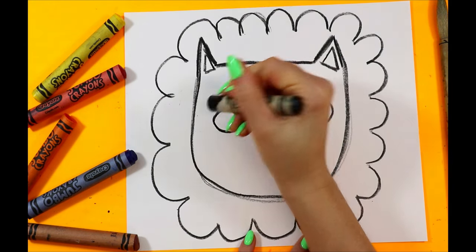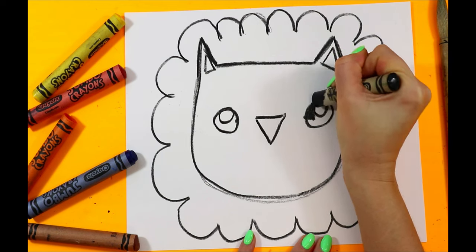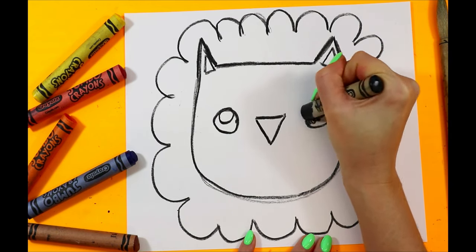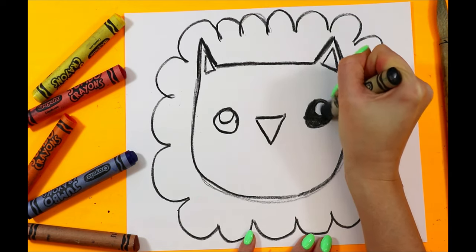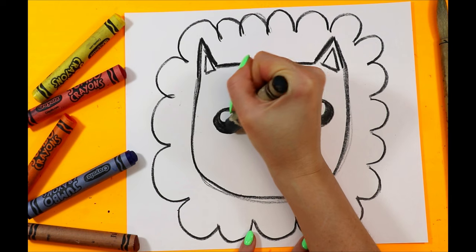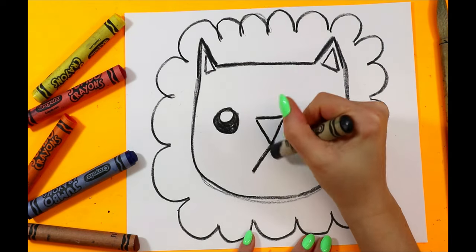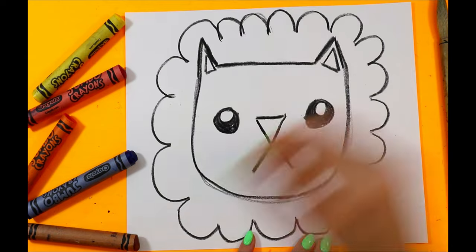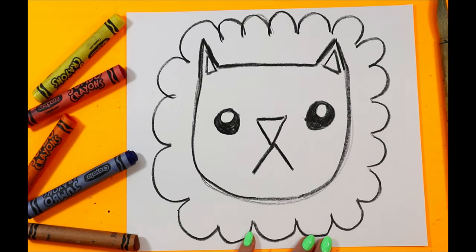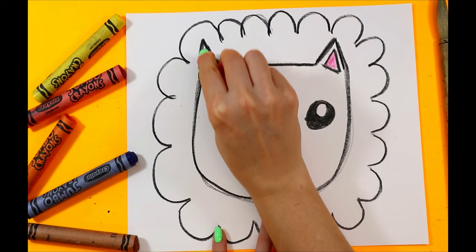In the eyes, we're going to draw another smaller circle. And we'll color in the eyes, leaving those little circles white. Let's draw pink in the ears and the nose.